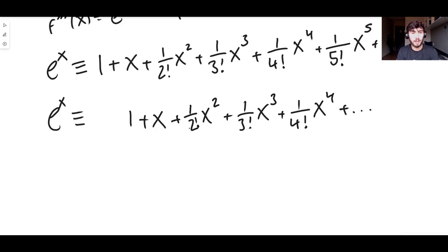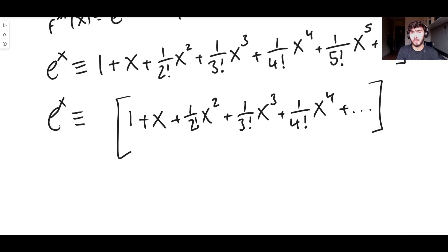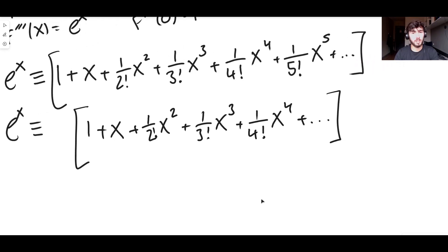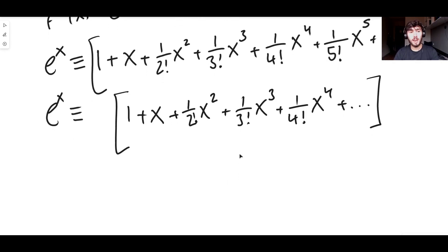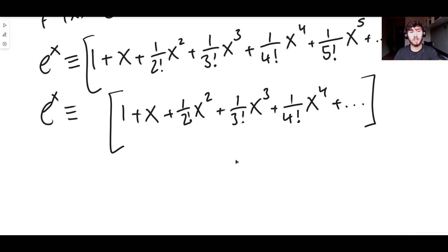What you get left over with is e to the x again — it's the same thing! It's one plus x plus one over two factorial x squared plus one over three factorial x cubed plus one over four factorial x to the four, and so on. You might wonder if there's one less term since we differentiated, but because there are an infinite number of terms, they still have the same number of terms — they both go to infinity. And that is essentially the Maclaurin series expansion for e to the x, valid for any value of x. Thank you guys so much for watching!